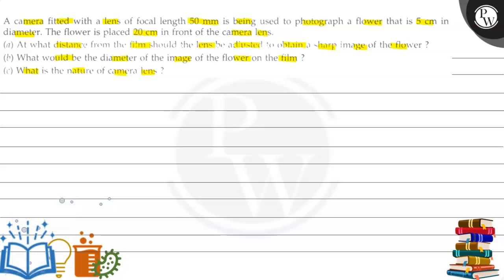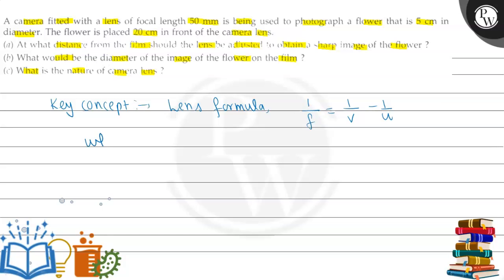Here we can write the key concept. We can write the lens formula: 1 by f is equal to 1 by v minus 1 by u, where f is the focal length, v is the image distance, and u is the object distance from the optical center.